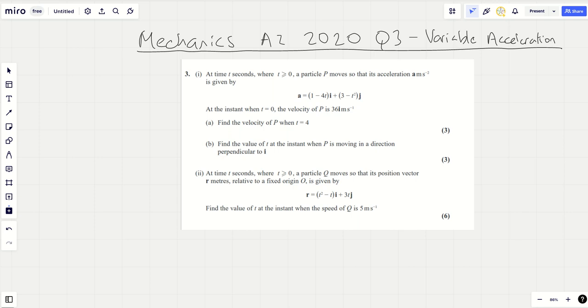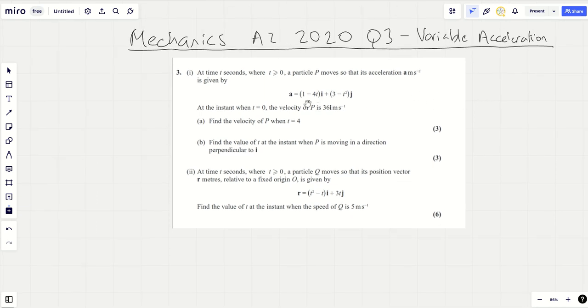Hello and welcome to another video, this time taking you through Mechanics 2020 Question 3, which happens to be a variable acceleration question. Let's have a look at it. You might wonder how I know it's a variable acceleration question. Well, it's simply in looking at that definition of acceleration. This acceleration depends on the time and so it's changing according to the time and therefore the acceleration is varying.